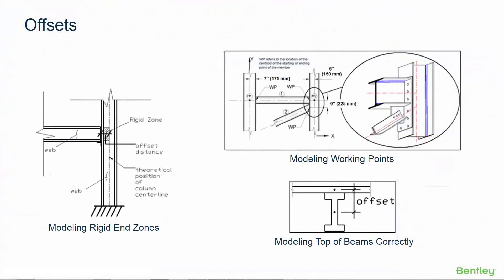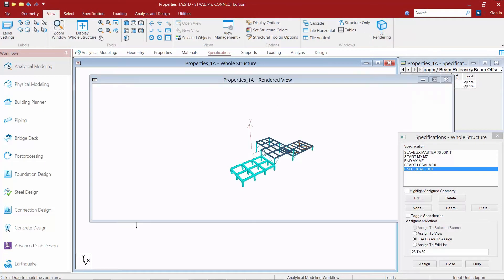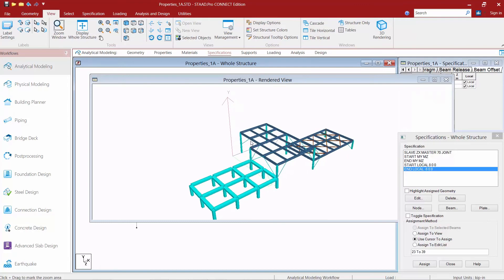The next scenario for using the offset command is to correctly model our working points, or the tops of beams. If we look at our sample model, we can see that where our members intersect at joints is along the centroids of the members. If this does not reflect how you're going to construct it in the field, you may want to use the offset command to reflect the true geometry. Let's return to a three-dimensional view of our structure to see how our beam members are currently being modeled.